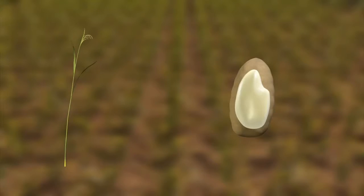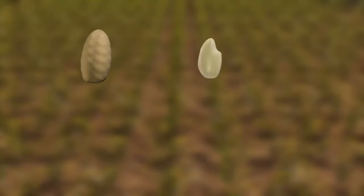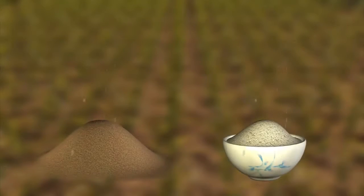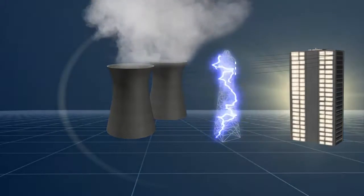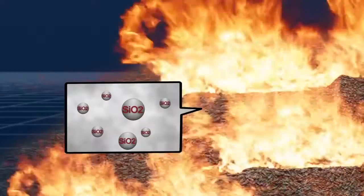Rice husks contain phytoliths, pieces of silica used to deter herbivores. Rice husks are burned as fuel. The ash was previously wasted, but now Italian tire company Pirelli is using the ash for silica.